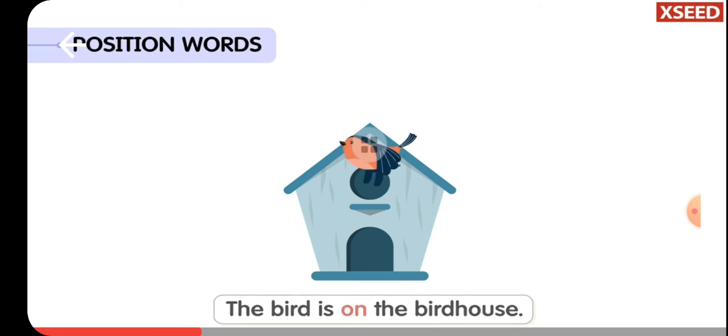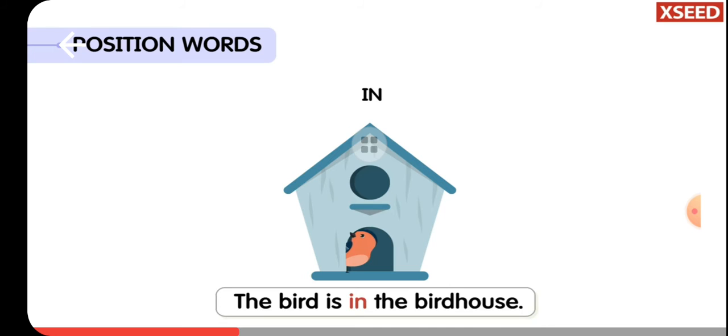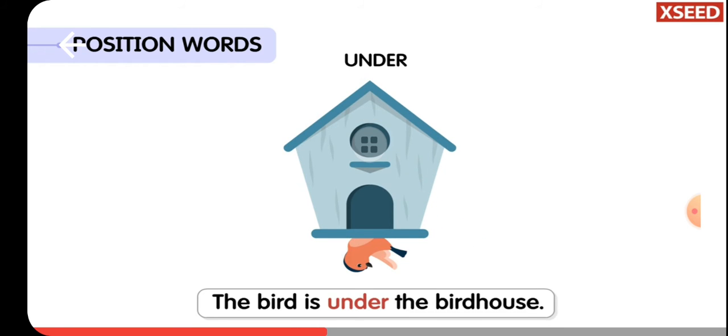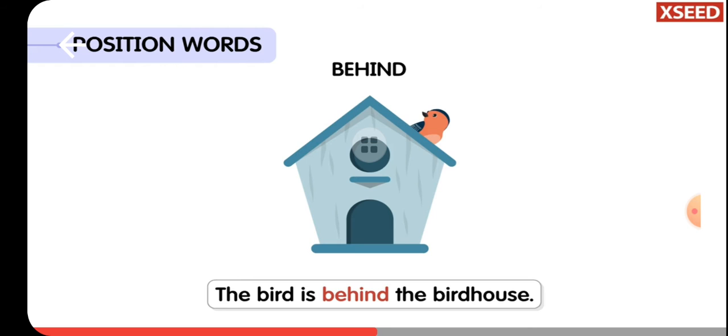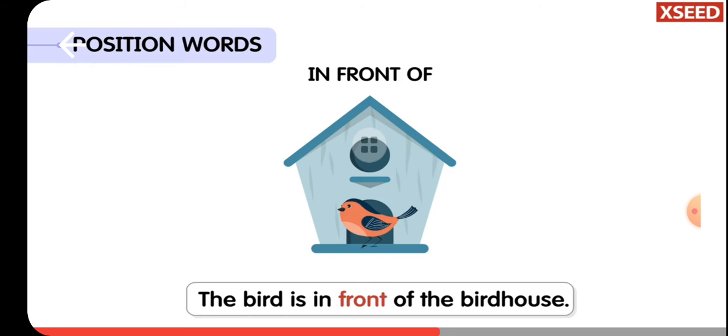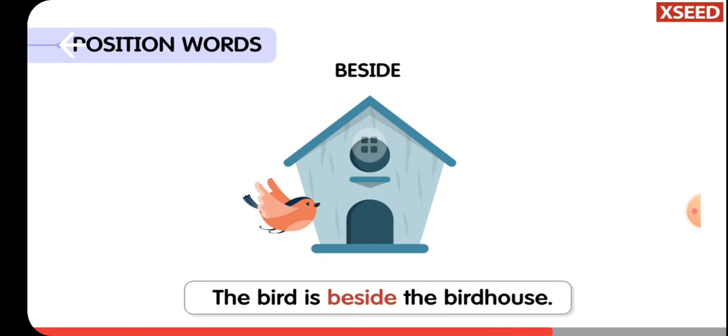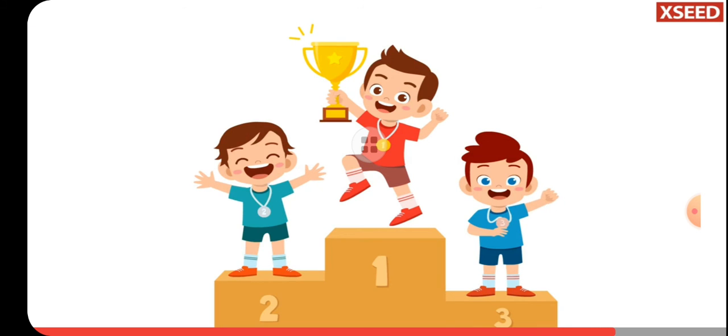The bird is on the birdhouse. The bird is in the birdhouse. The bird is above the birdhouse. The bird is under the birdhouse. The bird is behind the birdhouse. The bird is in front of the birdhouse. The birdhouse is in between the birds. The bird is beside the birdhouse.